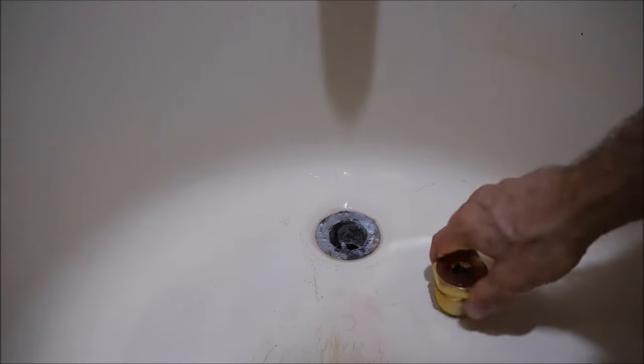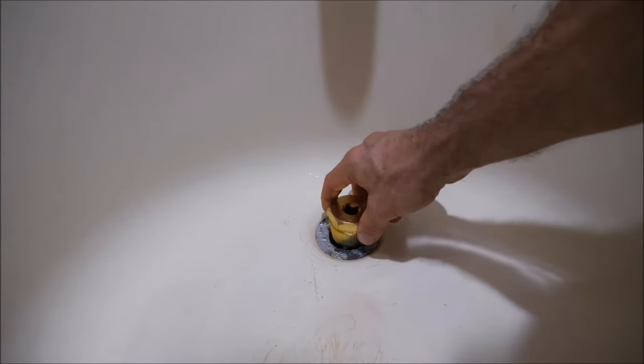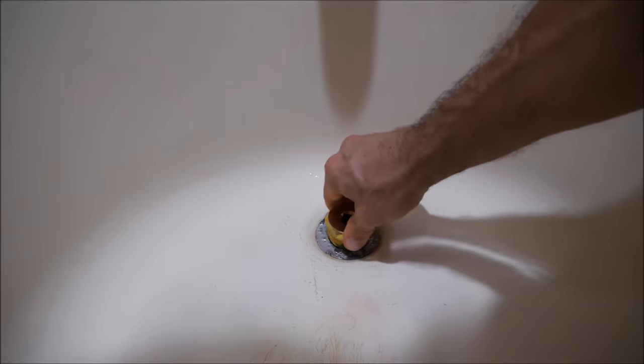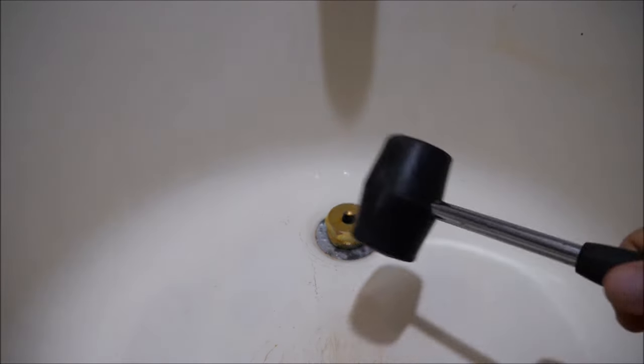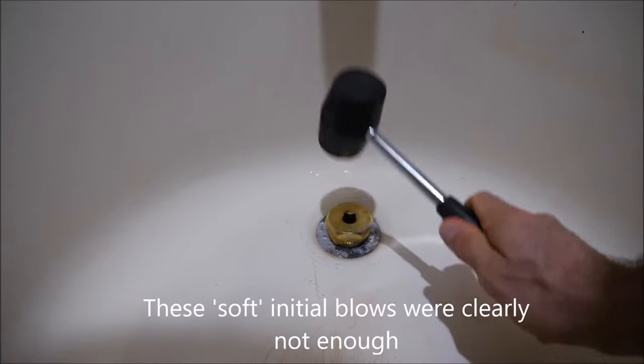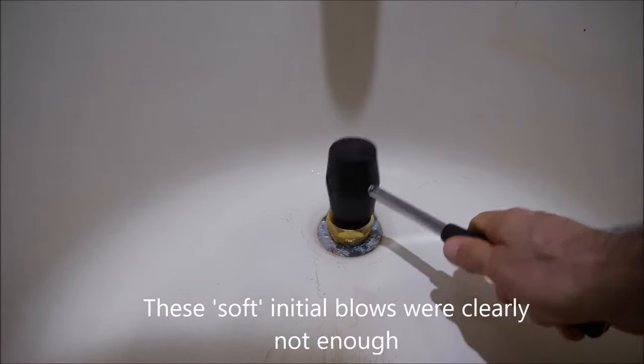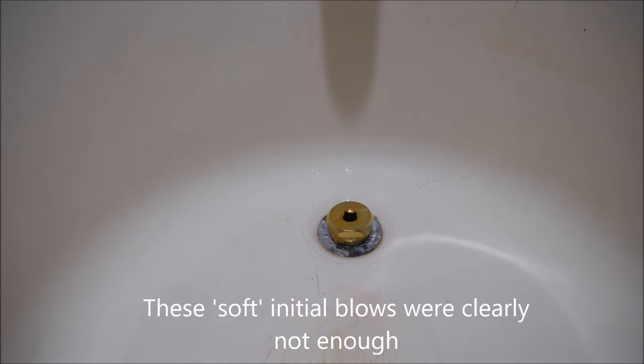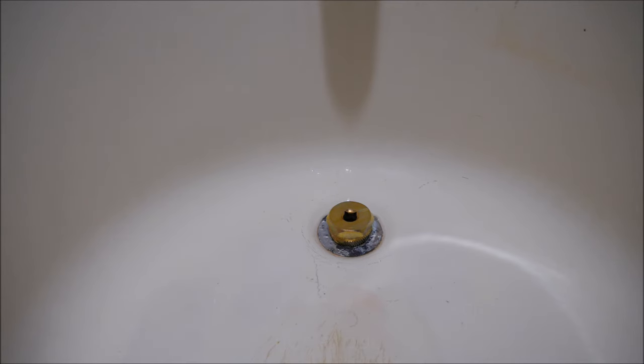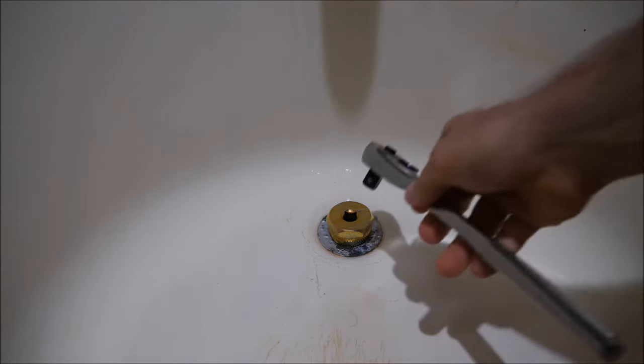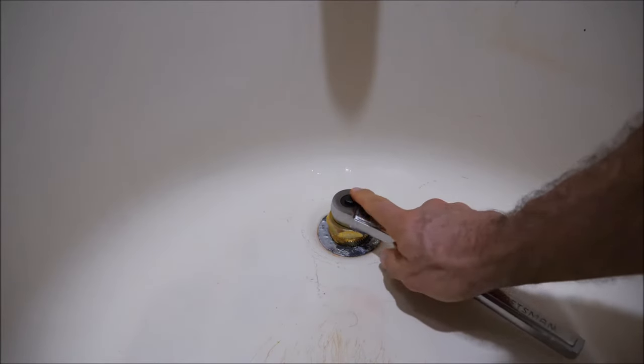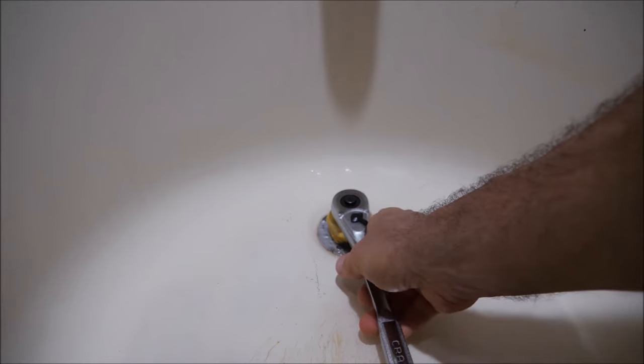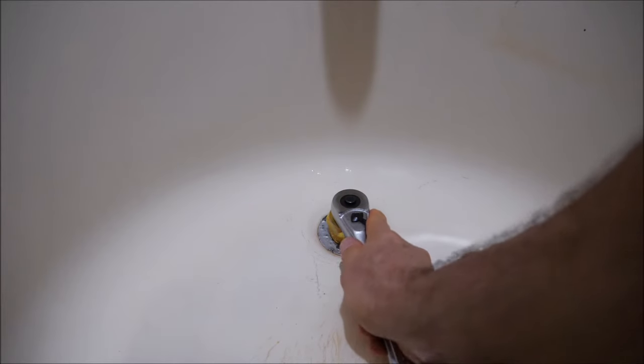All right, now go ahead and place the drain extractor in the tub drain. Center it. Give it a couple of hits with the mallet here. Make sure it's seated in there to give it an opportunity to bite into the drain that we're removing. I'm going to go ahead and seat or insert the ratchet. I want to make sure I have it set to counterclockwise.